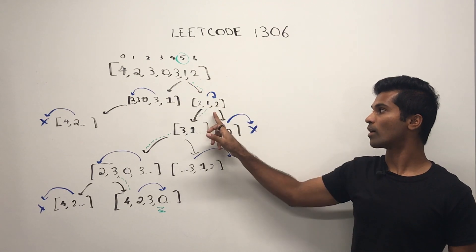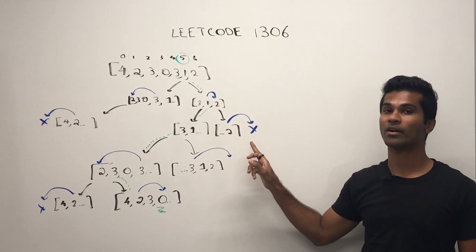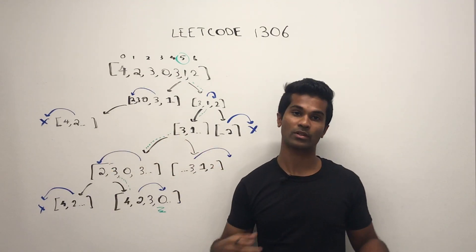Now let's go back to the start. One to the right, we end up at two, and two to the right, we end up out of bounds again.